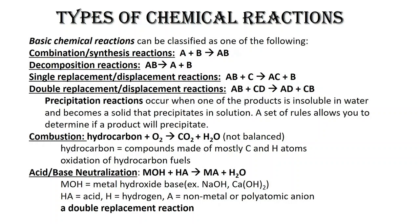Double replacement is when both species of reactants swap out. So let's say there are two pairs of couples on the dance floor and both couples swap out their partners. Sometimes in a double replacement you may have two aqueous solutions and when you put them together you have a precipitate that forms, and we will take a look at the rules you use to determine if a precipitate forms in just a moment.